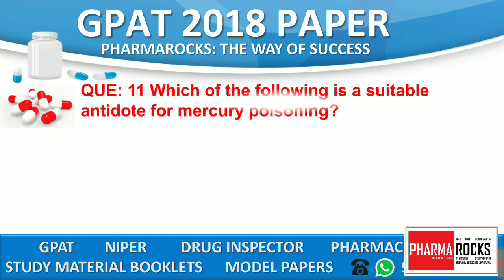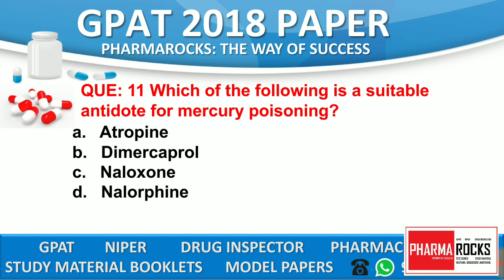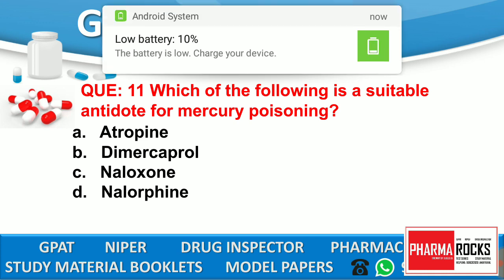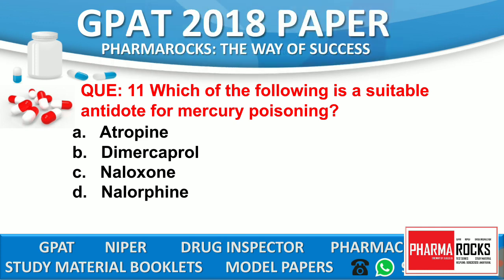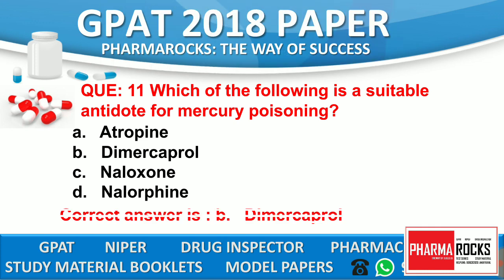Question number 11: Which of the following is a suitable antidote for mercury poisoning? Option A: Atropine. Option B: Dimercaprol. Option C: Naloxone. Option D: Nalorphine. The correct answer is B — Dimercaprol. Dimercaprol is the right antidote for mercury poisoning. This is a famous question usually asked in various competitive exams and was also asked in the GPAT 2018 paper.